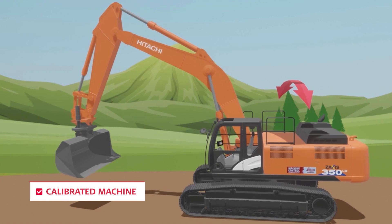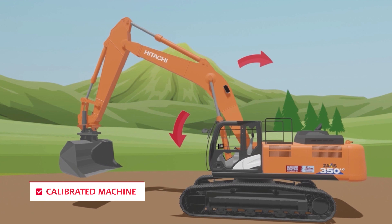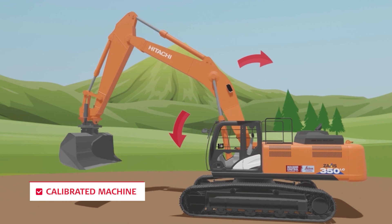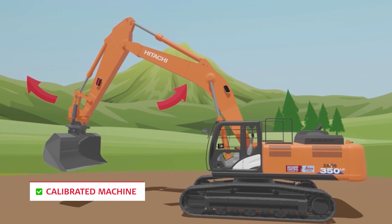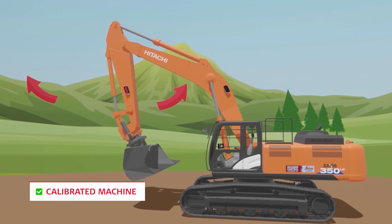As a starting point, the machine is calibrated, so we always know where the bucket is relative to the machine.